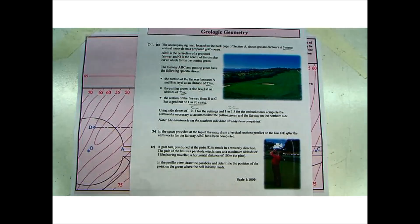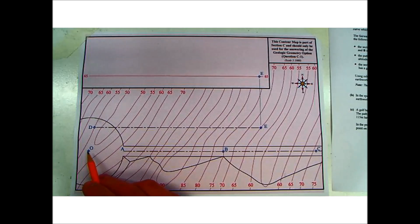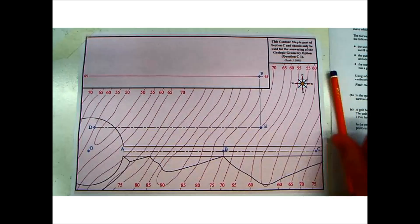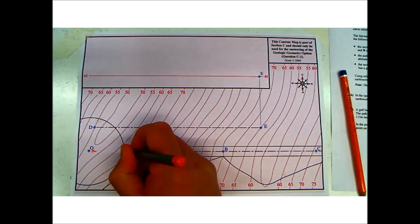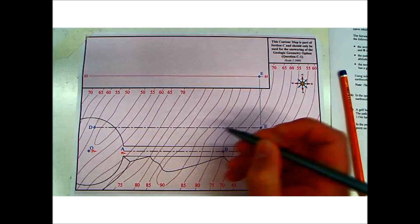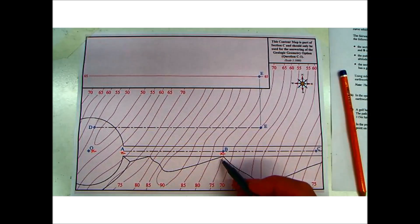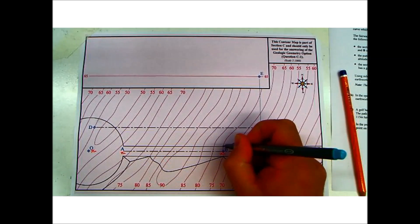Let's start with the green on the left-hand side. The entire green and center O should be at 75 meters, so let's write that in. The circular path at O is at 75 meters, A is at 75 meters, and B is at 75 meters. As you can see, B is actually on the 75-meter contour, so that will give us a point on the road in our earthworks.